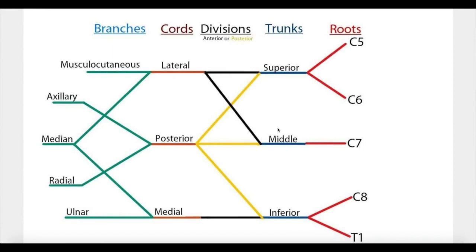Hi, this is Dr. Ahmed. Today we're going to talk about the brachial plexus. I'm going to explain first what is a plexus. We already know that we have a spinal cord and from the spinal cord arise 31 spinal nerves. Now these spinal nerves in some areas around the spinal cord form networks of nerves, with some nerves coming in, nerves going out, and some branching coming off these plexuses. These networks of nerves located around the spinal cord in specific areas are called plexuses.